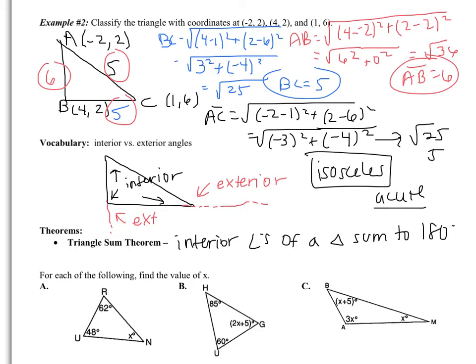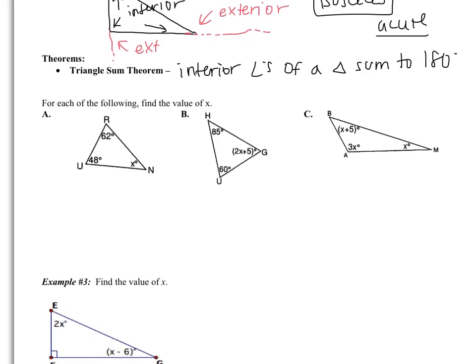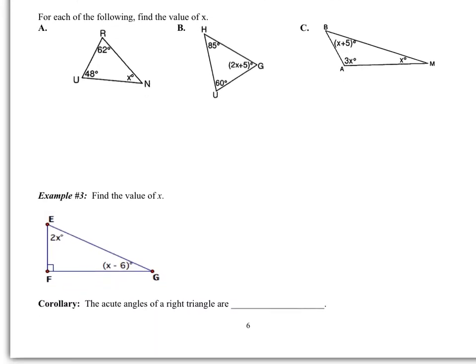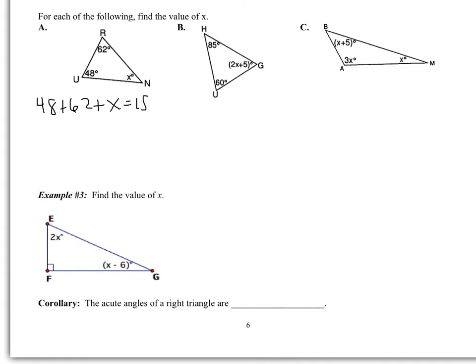Looking at example A — for each of the following, find the value of x. I know the three angles of a triangle sum to 180 degrees. So I have 48 + 62 + x = 180. 48 + 62 is 110. Subtracting 110, I get x equals 70 degrees. That's all there is to it.